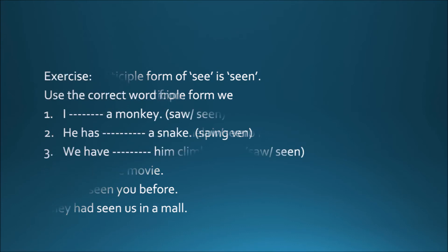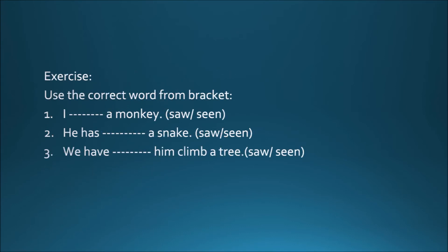Now let us do an exercise. Use the correct word from the bracket. First: I dash a monkey — saw or seen? Think about which verb form to use. Next: He has dash a snake — saw or seen?